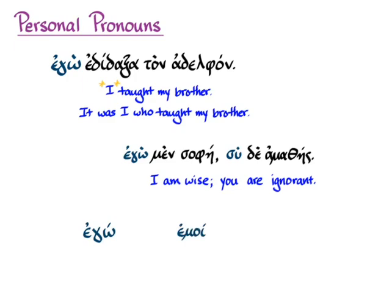There's a little funny thing about spelling with ego and emoi. If you want to add ge to those — meaning 'I at least' — you actually make it part of the word and the accent changes a little. So it's egoge to mean 'I at least,' and with emoi it's emoige for 'me at least.' You have to get used to the idea that when you see that form you should parse it as ego plus ge, or emoi plus ge. Just be on alert for that — they happen quite a bit and you may not immediately recognize it as the pronoun plus ge.